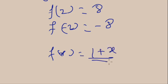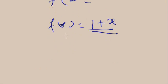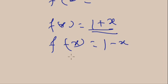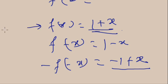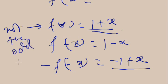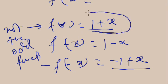Now check whether f(x) = 1 + x is an odd function. f(−x) = 1 − x, and −f(−x) = −1 + x. Since 1 + x ≠ −1 + x, we have f(x) ≠ −f(−x). So this function is not an odd function.